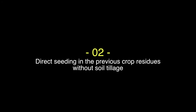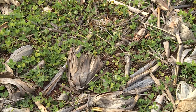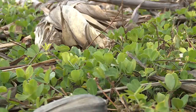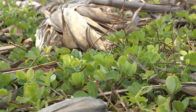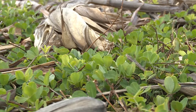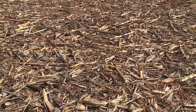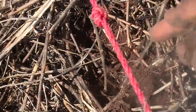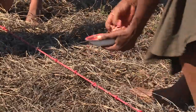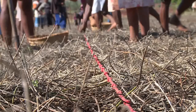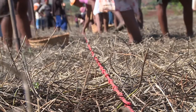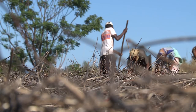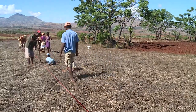The second principle is direct seeding in the previous crop residues without soil tillage. As we have understood, after a maize-legume intercrop, the next season we can grow rice. Let's look at Mr. Ernest's rice field at the time of planting. He sows in holes without ploughing the soil and without cleaning the field, so all the residues of the previous crop remain on the land. Let's ask Ernest what importance he gives to this practice.